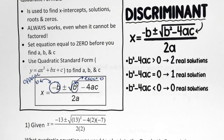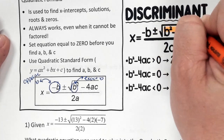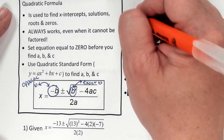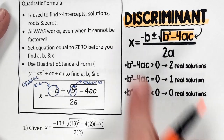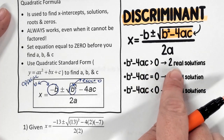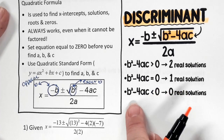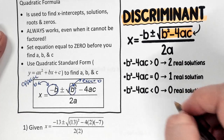We're also going to talk about the discriminant. Your discriminant is what's inside the radical, not including the radical sign — that's B squared minus 4AC. If your discriminant is greater than zero, you have two real solutions. If your discriminant is equal to zero, you have one real solution. If your discriminant is less than zero, meaning negative, you have zero real solutions.